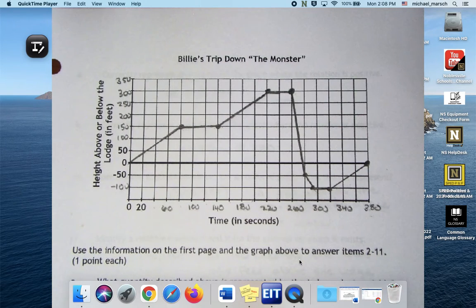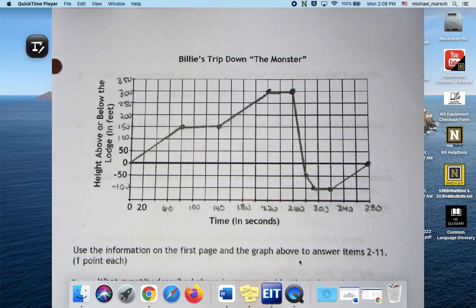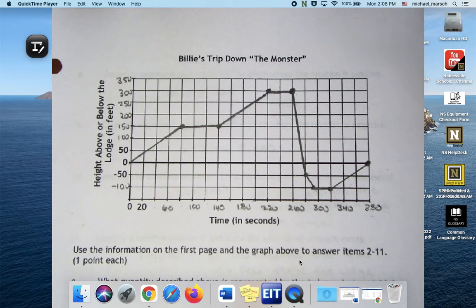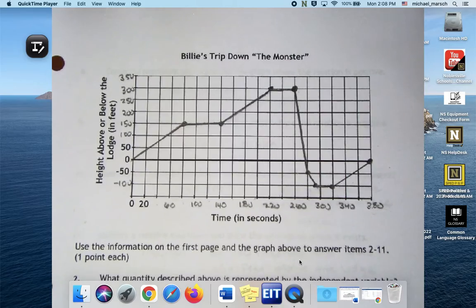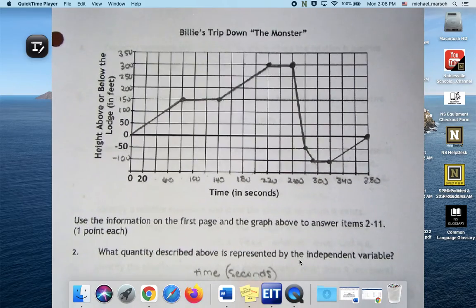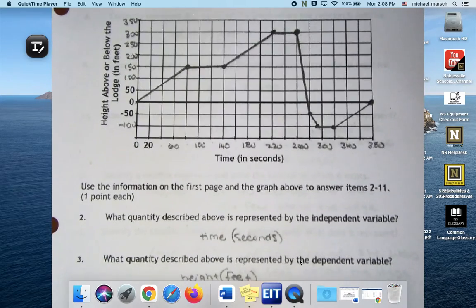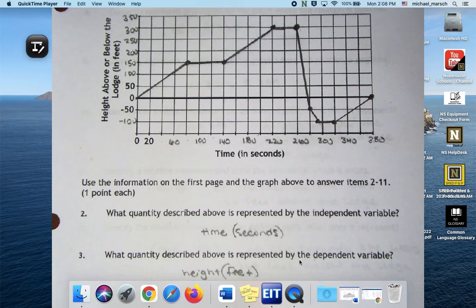This is what your graph should look like. Moving right along, what quantity described above is represented by the independent? Time, right, that's our x value. Dependent is height.